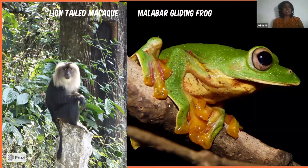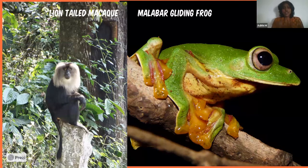On the right you see a Malabar gliding frog — a brilliantly fluorescent green frog that can actually glide. It has webbing in its feet that allows it to glide from foliage to foliage, and it makes foam nests in low-hanging foliage around pools. This is also a species endemic to the Western Ghats.